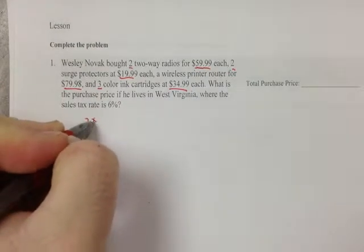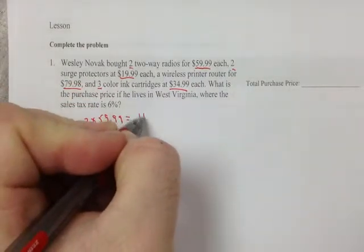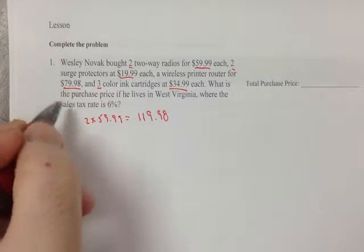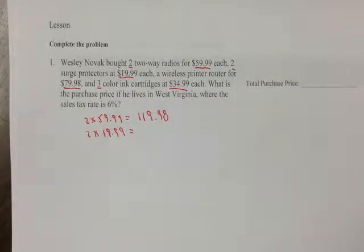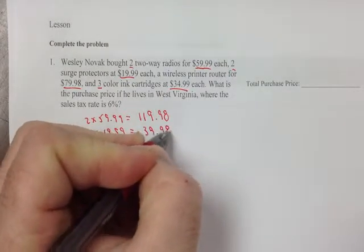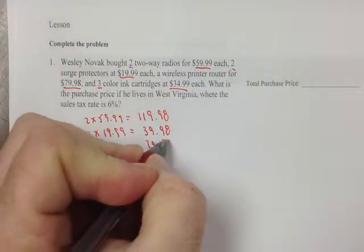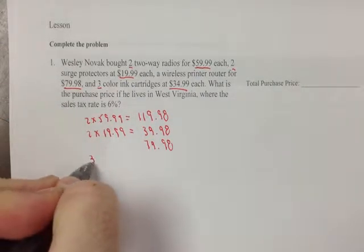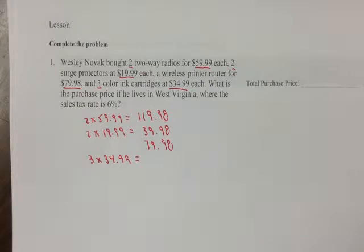So let's figure this out. We'll write it down. Two times $59.99 is $119.98. Two times $19.99 is $39.98. There's only one wireless printer, so we'll just write down $79.98. And three color printers at $34.99 apiece — three times $34.99 — gives us $104.97.